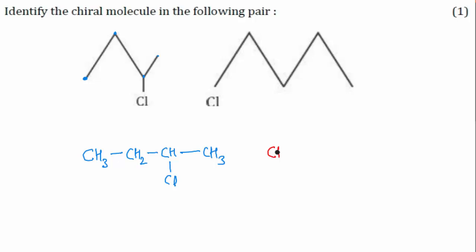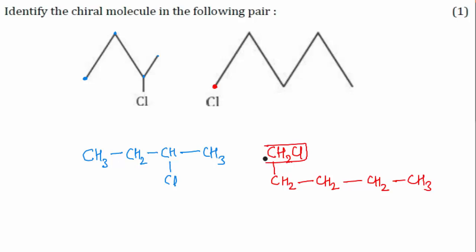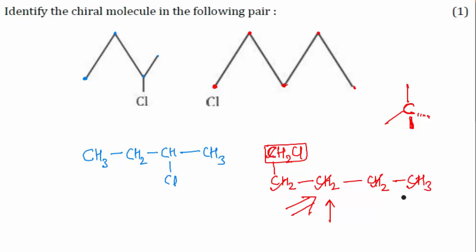Now for the second compound, you can see it is: CH2Cl, then CH2, then CH2, then CH2, then CH2, and then CH3. In this compound there are no chiral carbons, because a chiral carbon is one where all four groups attached to that carbon are different. In every carbon here, at least two atoms attached are the same, so there are no chiral carbons present in this compound.